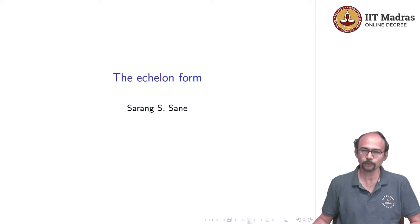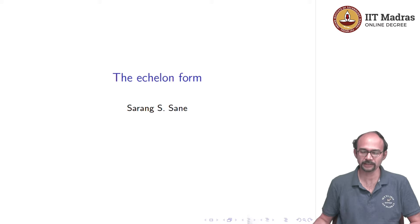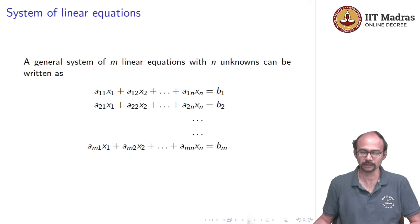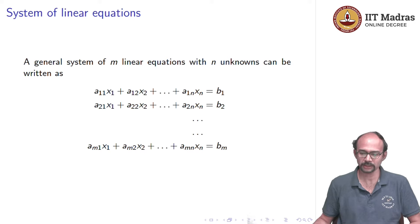The echelon form is a particular form for a matrix, and when the matrix is in this form, we can read off solutions quite easily. Let us first recall what is the system of linear equations.